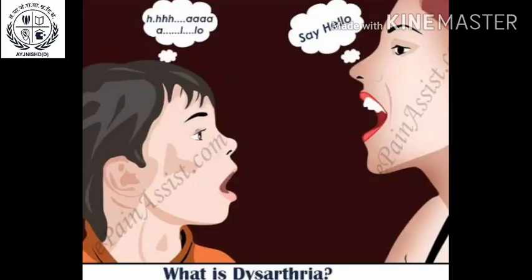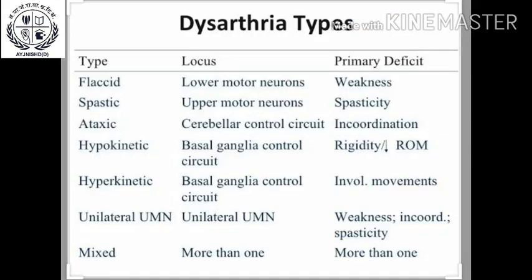Dysarthria is one type of motor speech disorder resulting from disturbances in muscular control — weakness, slowness, or incoordination of the speech mechanism — due to damage to the central or peripheral nervous system, or both. Depending on the site of lesion, dysarthria is categorized into several types.